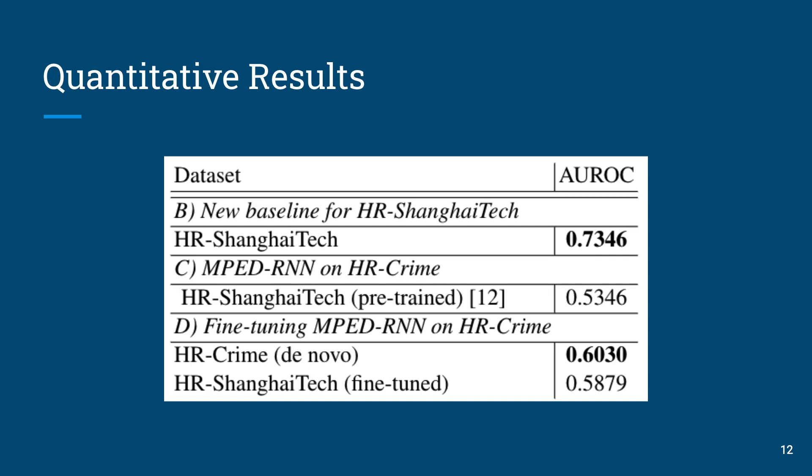For our final experiment, we trained the MPAD-RNN architecture using the newly created HR-Crime. We also fine-tuned the pre-trained MPAD-RNN model on HR-Crime, aiming to close the structural gap between the two datasets. The model trained de novo on HR-Crime achieves a performance of 0.603, which is explained by the increased complexity of HR-Crime compared to HR-ShanghaiTech. The fine-tuned model achieves a lower performance of 0.5879. Compared to the results of the previous experiment, our fine-tuned model shows a slight increase in performance, suggesting that the pre-training approach is still relevant to consider.